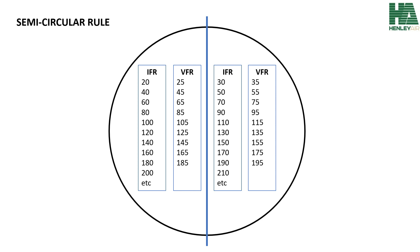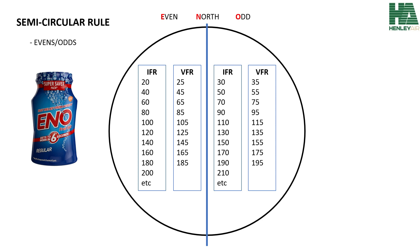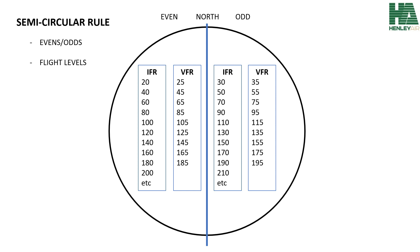The semi-circular rule basically assigns different heights to aircraft depending on what direction you are flying. They divided the rule into evens and odds. On the eastern side you will fly odd numbers, and on the western side you will fly even numbers. We remember this by the acronym ENO: Even, North, and Odd. The flight level is assigned — show the flight level and just add two zeros, which means you will be flying at 12,000 feet, measured from the international standard atmosphere of 1013, also called QNH.